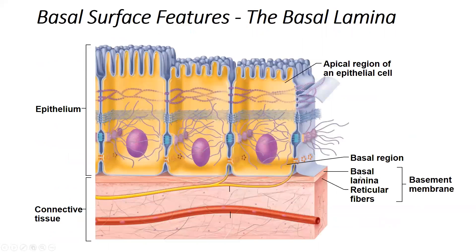The basal lamina is a thin non-cellular connective tissue, and the reticular fibers are actually coming from the connective tissue. We have the cellular layer of epithelial cells, underneath which is the non-cellular structural basal lamina. Interacting with the basal lamina are reticular fibers coming from the connective tissue, which also contains collagen fibers and elastic fibers. Specifically, the reticular fibers that reach up from the connective tissue interact with the basal lamina, and those two structures together form the basement membrane, keeping the cells anchored to the connective tissue.